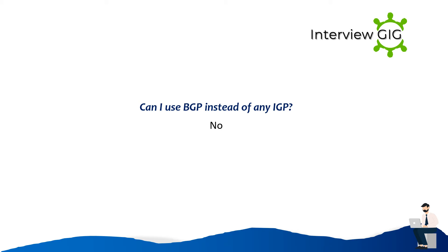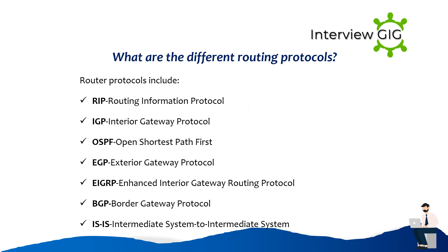Can I use BGP instead of any IGP? No. What are the different routing protocols? Routing protocols include RIP (Routing Information Protocol), IGP (Interior Gateway Protocol), OSPF (Open Shortest Path First), BGP (Border Gateway Protocol), EIGRP (Enhanced Interior Gateway Routing Protocol), and IS-IS (Intermediate System to Intermediate System).